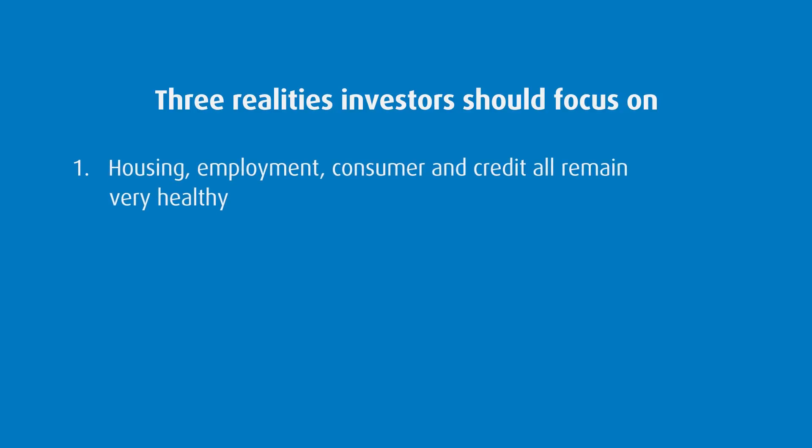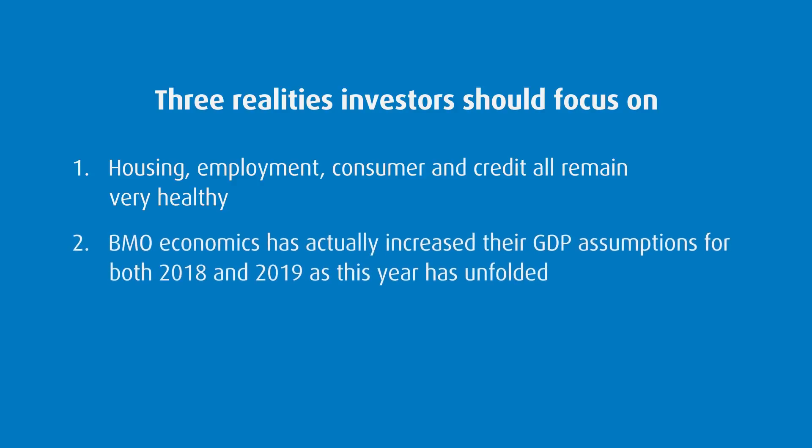Number one, signs of a U.S. recession are not prevalent. Housing, employment, the consumer, and credit all remain very healthy. Number two, the BMO economics team has actually increased their GDP assumptions for both 2018 and 2019 as the year has unfolded.